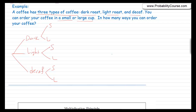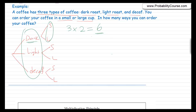In fact, we can do the counting this way. There are three possibilities for the type of coffee, and for any type of coffee, there are two possibilities for the size. So the total number of ways you can order your coffee is three times two, which equals six. This is called the multiplication principle.